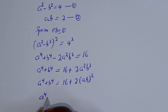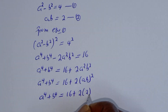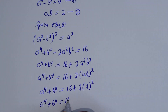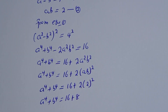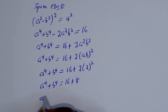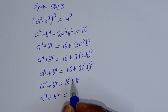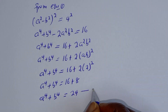So a to the power 4 plus b to the power 4 equals 16 plus 2 times (2) squared, which is 16 plus 2 times 4, giving us 16 plus 8 equals 24. Let's call this equation 3.